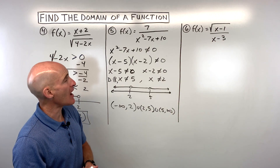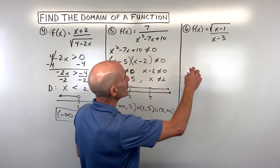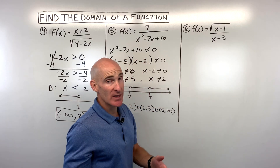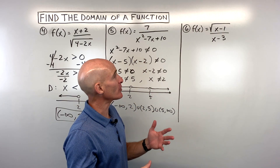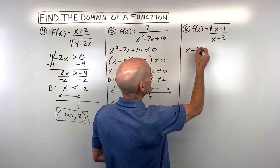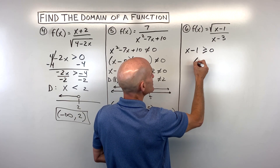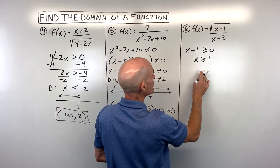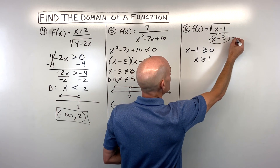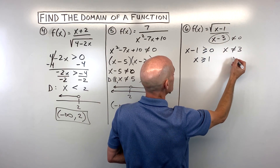Let's go ahead and do the last problem — number six. We've got a square root and we have a fraction. So we can't divide by zero, and we can't take the square root of a negative number. Let's start with the square root first. Whatever's underneath that square root has to be greater than or equal to zero, so if I add one to both sides, I know that x has to be greater than or equal to one. Also, the denominator cannot be zero — if I add three to both sides, I can see that x cannot be three.